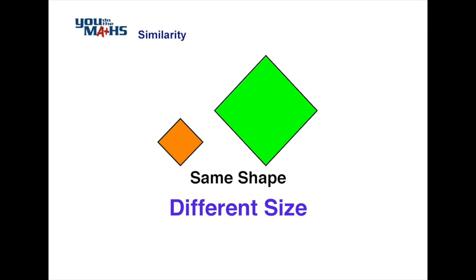Here's a pair of shapes where they're both shaped like diamonds, or you could argue they're squares that have been rotated. The one in orange is a smaller version of the green one, or the green one's a larger version of the orange one.